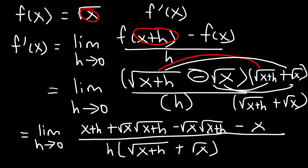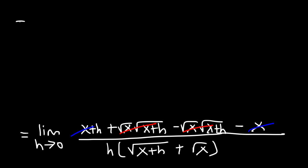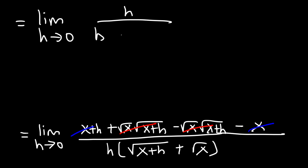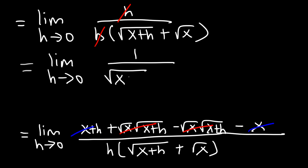Now the square root of x times the square root of x plus h — we have a positive term and a negative one, so they add up and cancel to zero. x and negative x will also add up to zero. So now we're left with the limit as h approaches 0 of h divided by h times the square root of x plus h plus the square root of x. And h divided by h is 1.